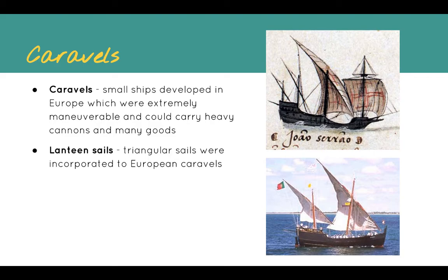One of the reasons these ships were so maneuverable was the adoption of what we call lateen sails — basically triangular sails developed in the Indian Ocean and used by people in the Middle East. Europeans borrowed them and combined them with large rectangular sails to make ships very maneuverable and efficient. So lots of technology here — cartography, the compass and astrolabe, and these new types of ships made Europeans much stronger ocean-going nations.